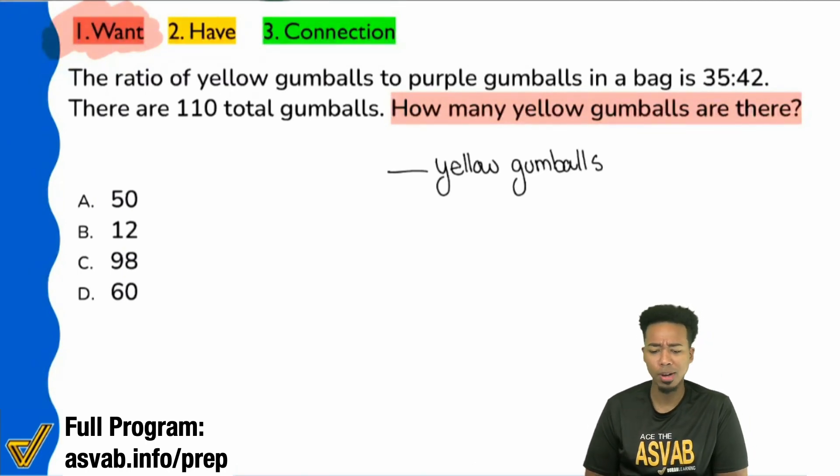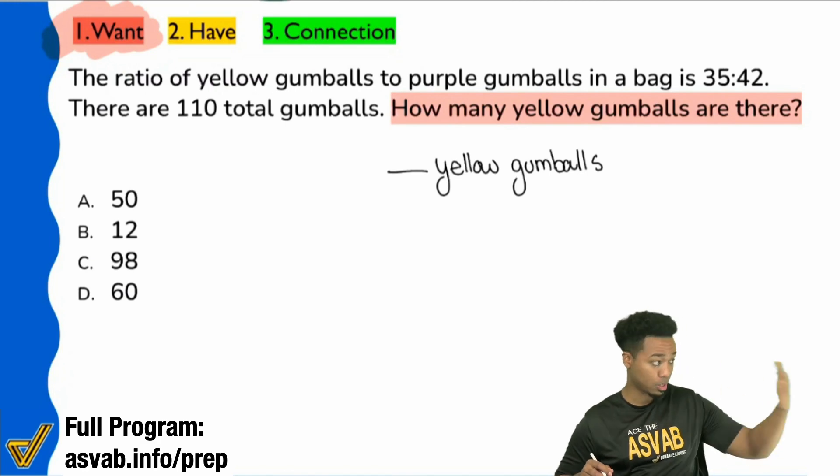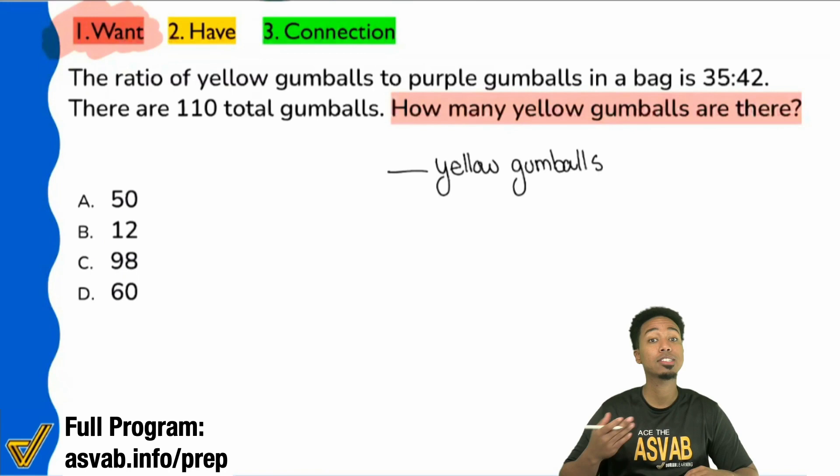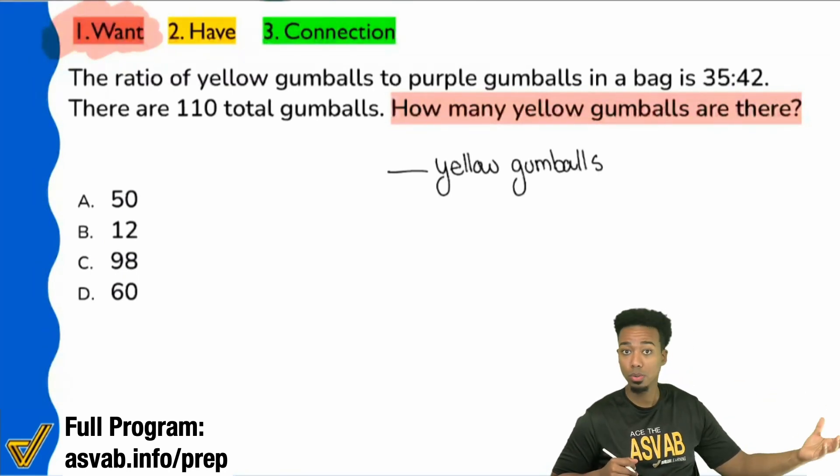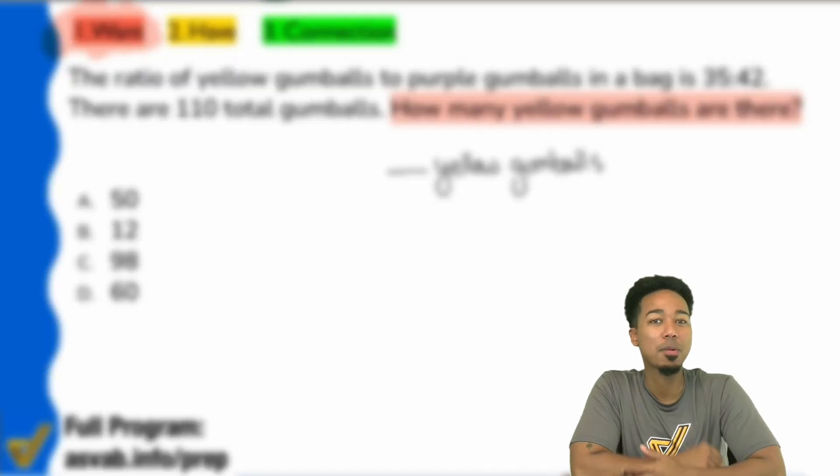After reading that, we're looking for yellow gumballs and it says the ratio of yellow gumballs to purple. No matter what we see up next, is it going to be important? Absolutely. Now let me caution you here because when we read here, it says again, the ratio of blah, blah, blah, the ratio in a bag is 35 to 42.